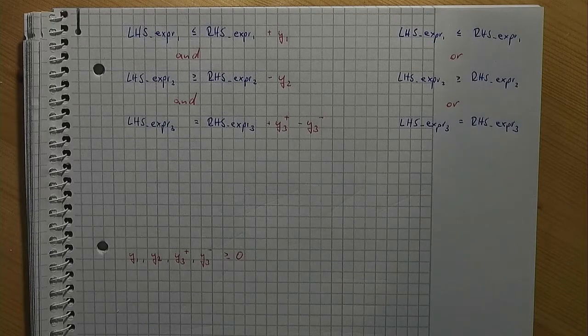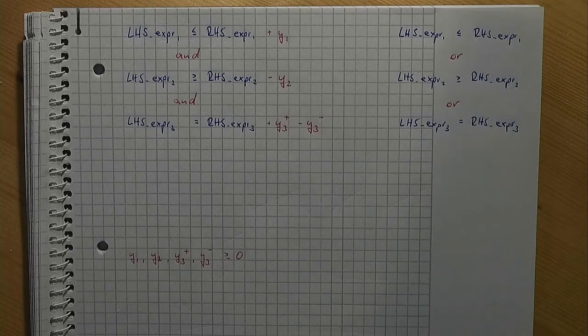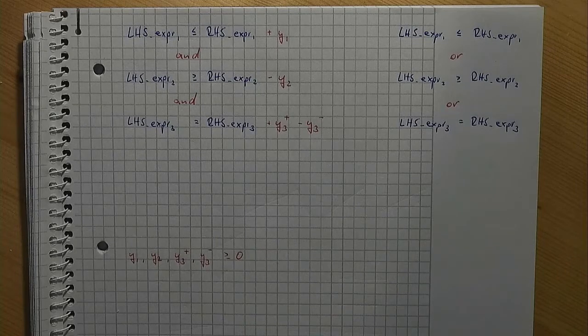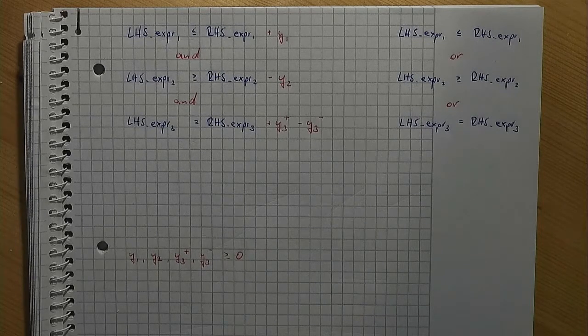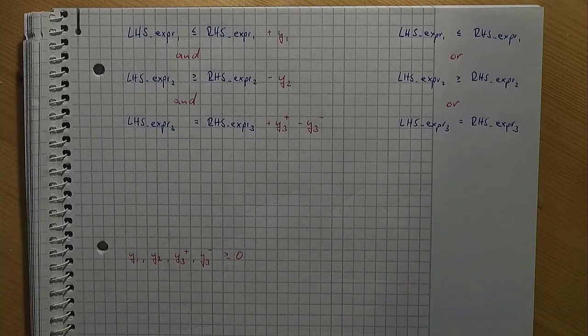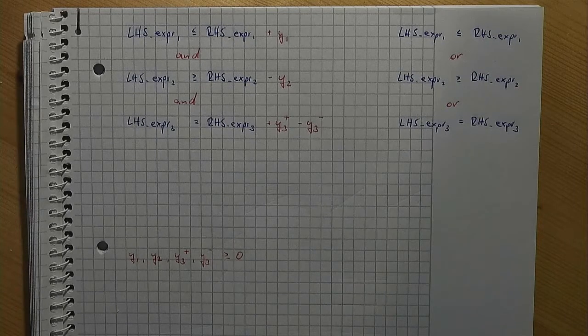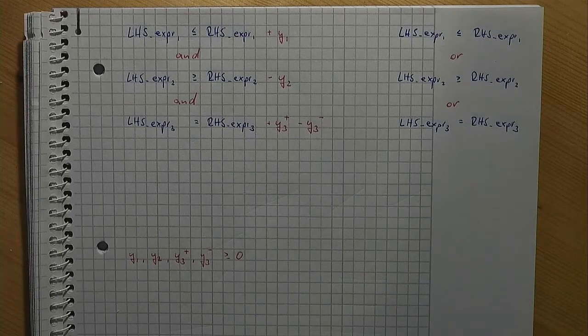It's now clear that all constraints can always be fulfilled by choosing appropriate values for the y variables. In other words, none of these constraints is in effect.